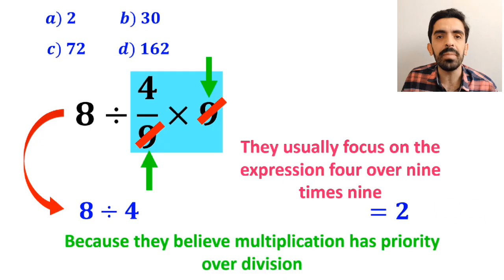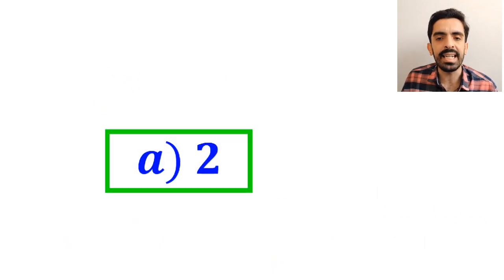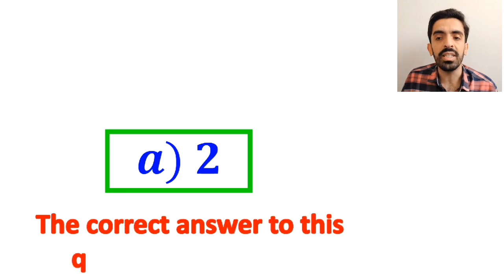Which ultimately gives them the answer 2. Then, without any hesitation, they quickly say that the correct answer to this question is option A.